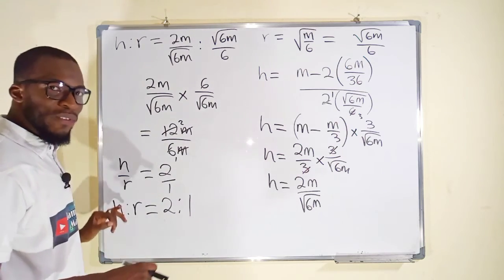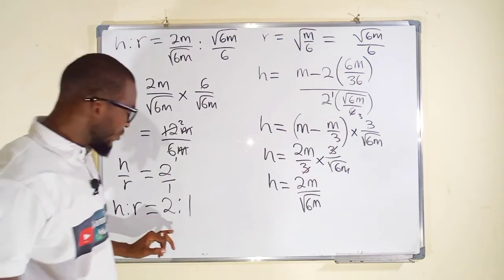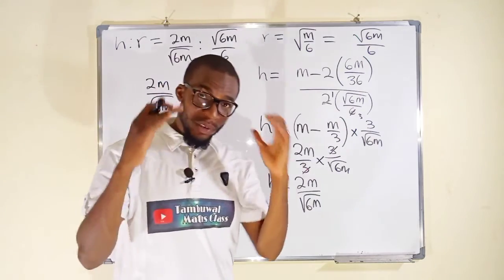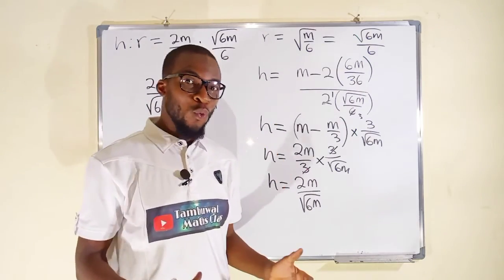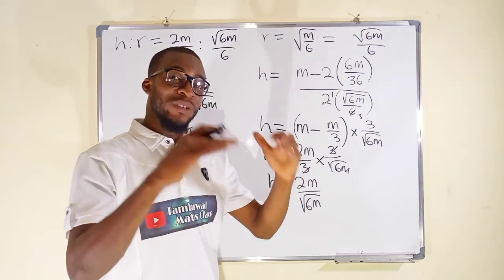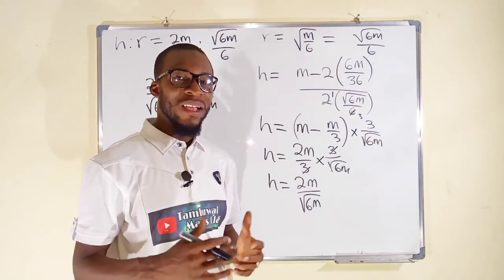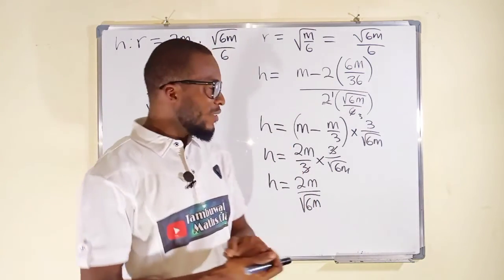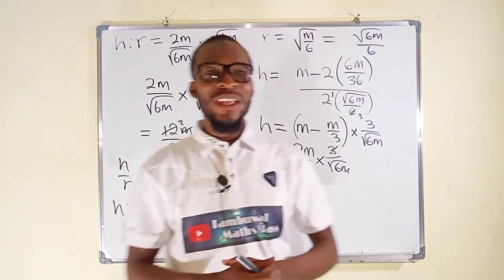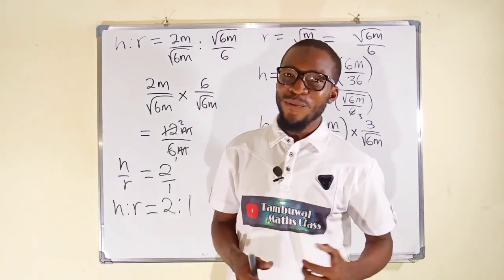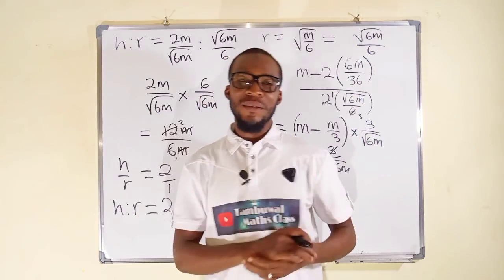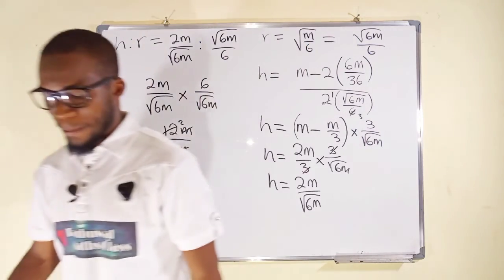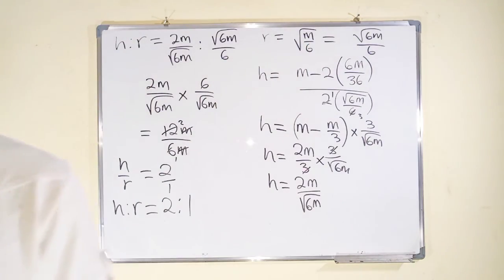So the ratio of the height to the radius is 2 to 1 at the maximum volume when the total surface area is equal to M pi. This is all I have for you today. Thank you for watching. Do have a nice day.